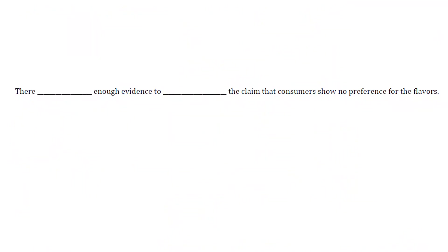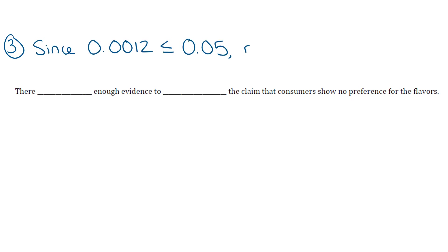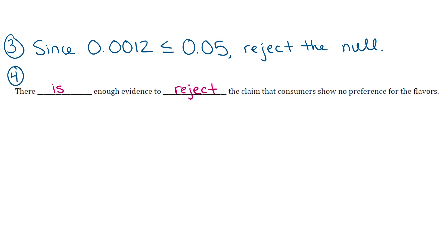Step three: we compare the p-value with alpha. Since 0.0012 is less than 0.05, we reject the null hypothesis. Using one of the standard conclusion statements, we state that there is enough evidence to reject the claim that consumers show no preference for the fruit soda flavors.